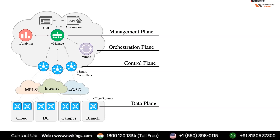Once authentication is complete, the device forms a DTLS tunnel with vBond. vBond then shares vManage and vSmart IP addresses, and vEdges form tunnels with both. These tunnels are either TLS or DTLS. TLS is TCP-based, while DTLS is UDP-based.